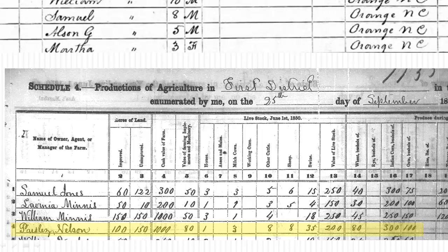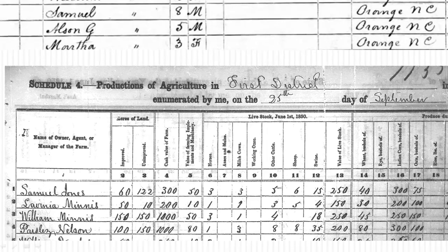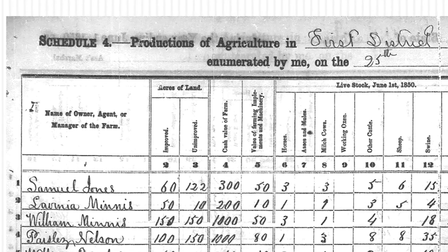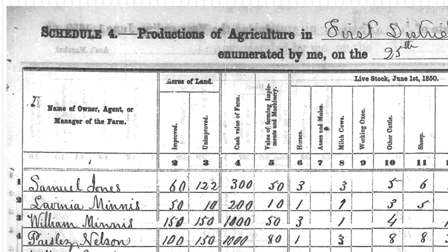It is also helpful if the population schedule missed a family, but it does only list the head of household. In addition, the names of neighboring farmers often helps researchers distinguish between two people with the same name.